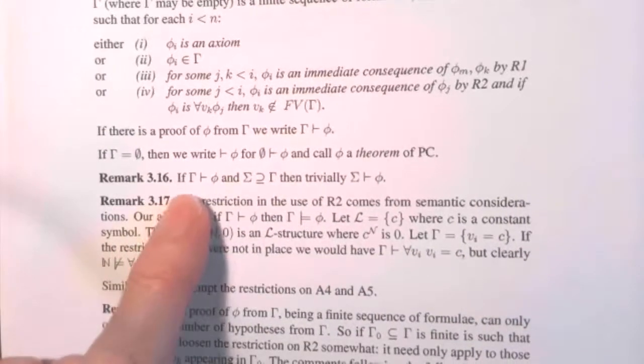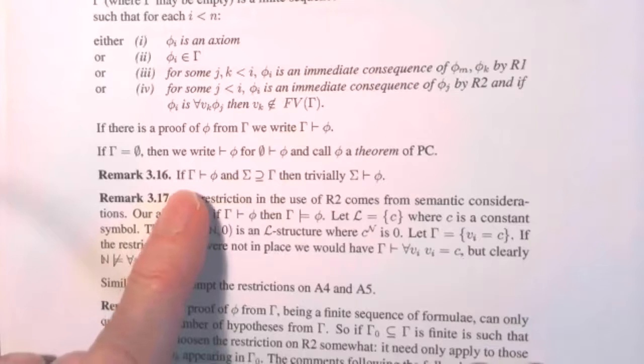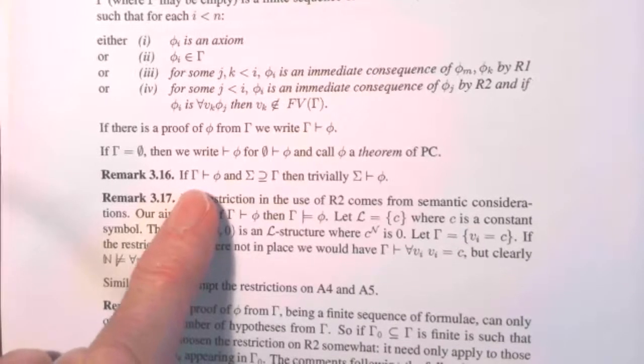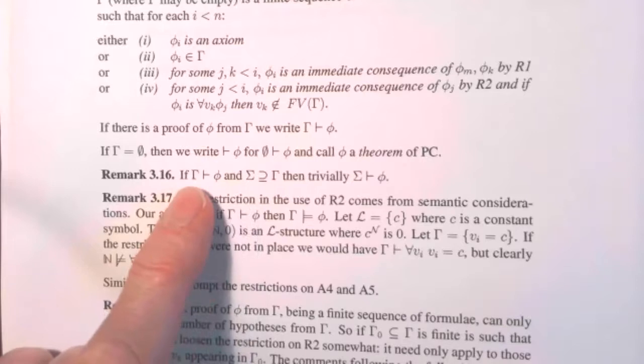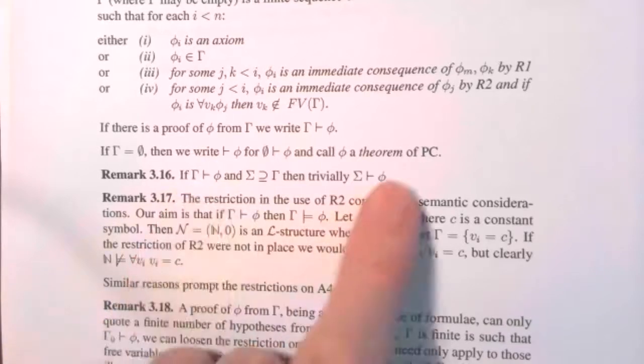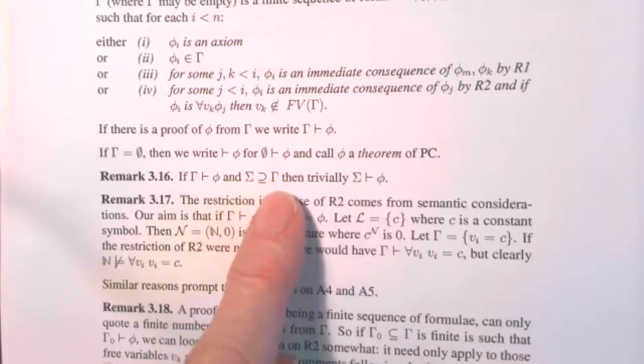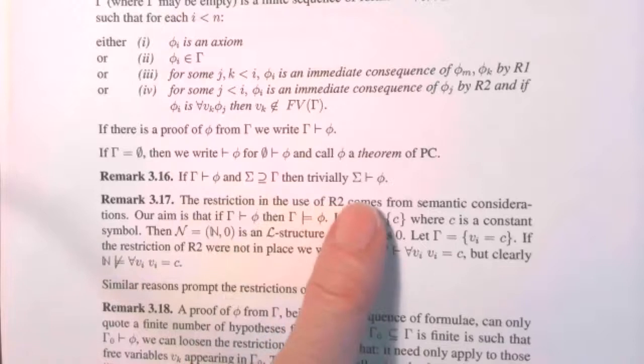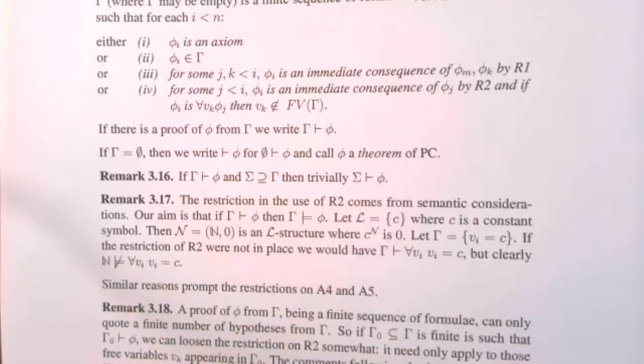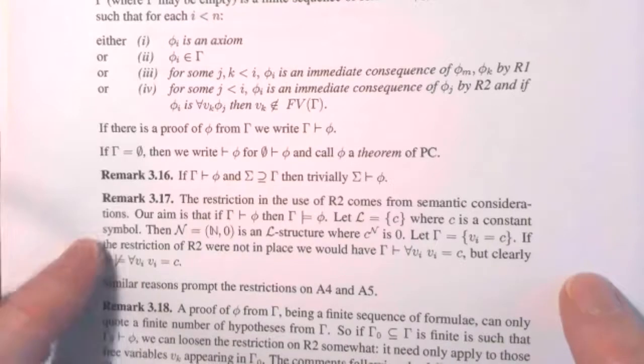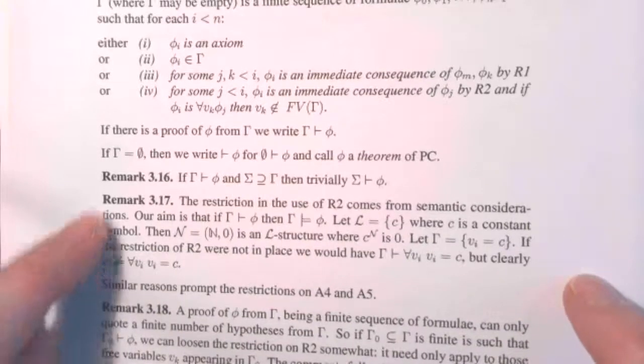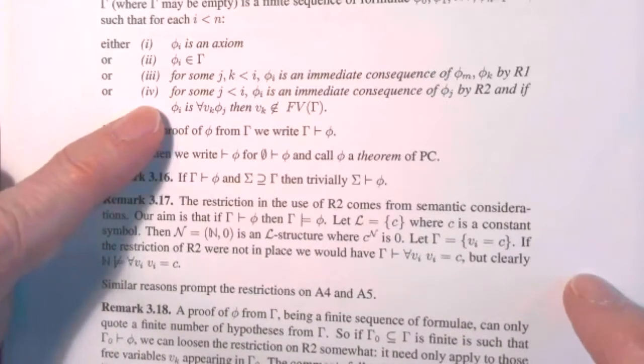The remark here is just the obvious one. If I can prove phi from hypotheses gamma, I can prove it from any larger set, because sigma contains everything I needed for that proof. That's kind of trivial.